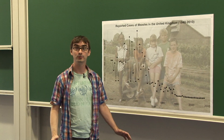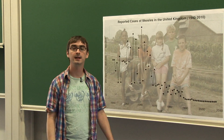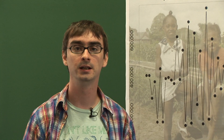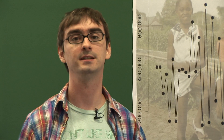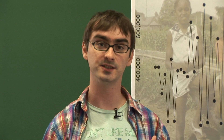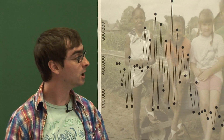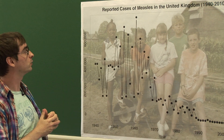My name is Andrew Conlon, and I'm a mathematician who's interested in understanding the spread of infectious diseases. Originally I actually trained as a physicist, and I became interested in using maths to understand diseases when I became aware of and started studying a very famous dataset of measles incidents in the United Kingdom during the past century, which we've got behind me on the board here.